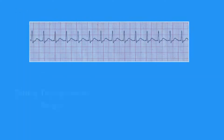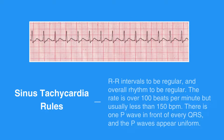The sinus tachycardia rules include R intervals to be regular, and the overall rhythm to be regular. The rate is over 100 beats per minute but usually less than 150 BPM. There is one P wave in front of every QRS, and the P waves appear uniform.